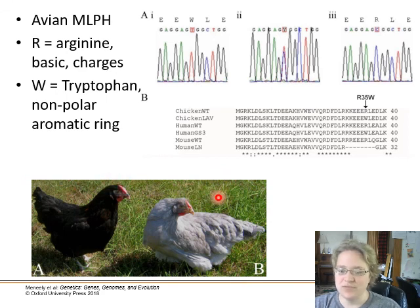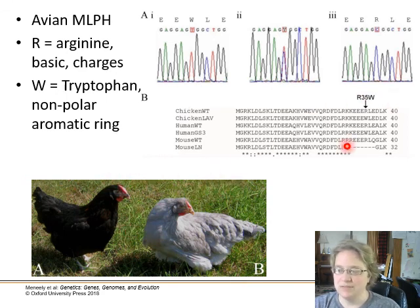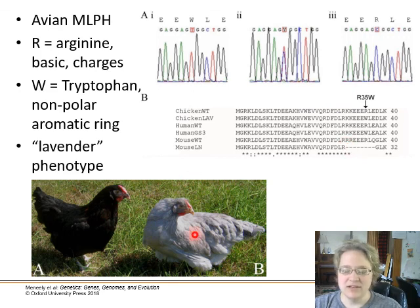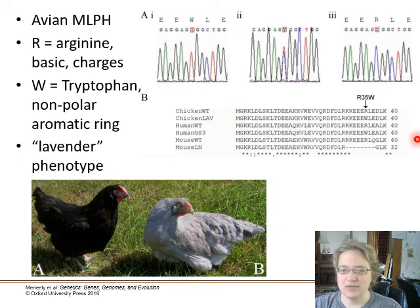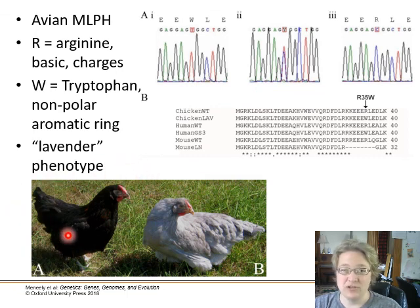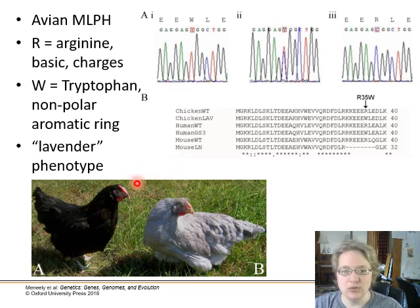That one amino acid residue change is enough to swap melanophyllin activity from a very dark pigmented chicken feather to a very light, shiny chicken feather — what they call the lavender phenotype in chickens. This dilution phenotype is epistatic to any of the other genes affecting feather coloration, so if this had been a spotted or red chicken, you would still get this dilution phenotype on top of whatever color the chicken was.